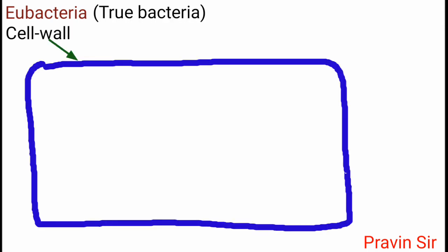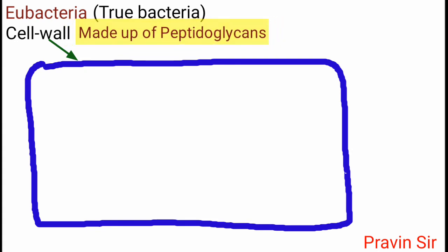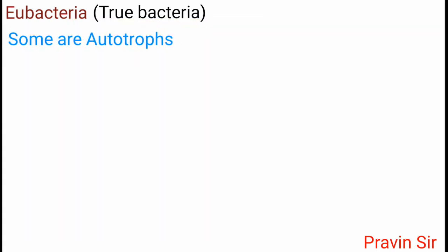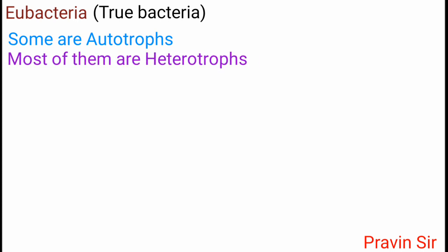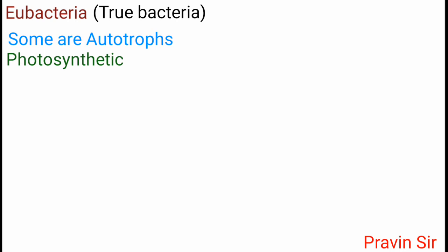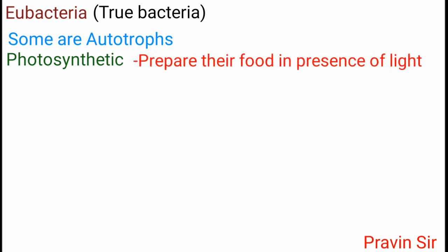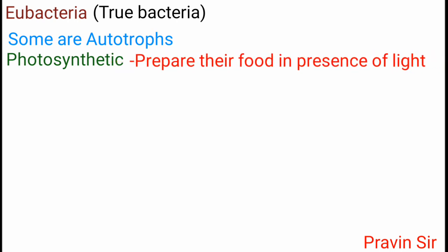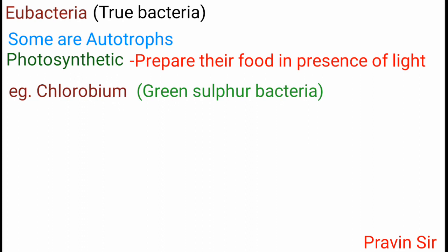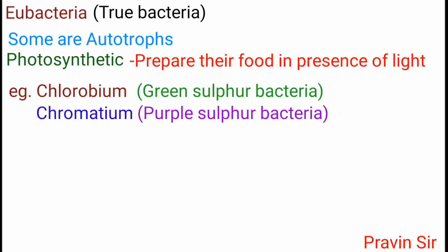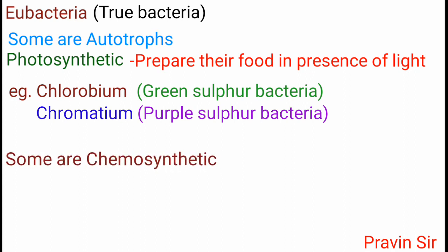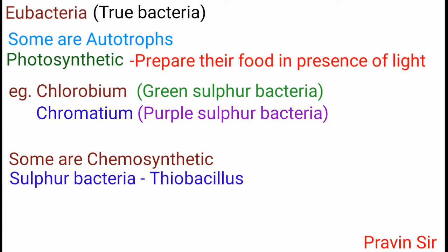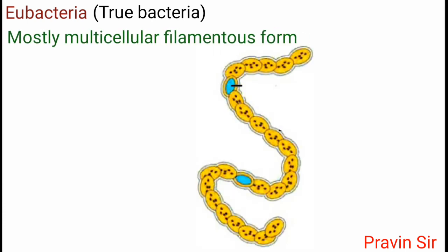Eubacteria are true bacteria whose cell wall is made up of peptidoglycans. Some are autotrophs and most are heterotrophs. Autotrophs can be photosynthetic — they prepare their food in the presence of light. For example, Chlorobium is a green sulfur bacteria, Chromatium is a purple sulfur bacteria. Some are chemosynthetic, such as sulfur bacteria Thiobacillus.